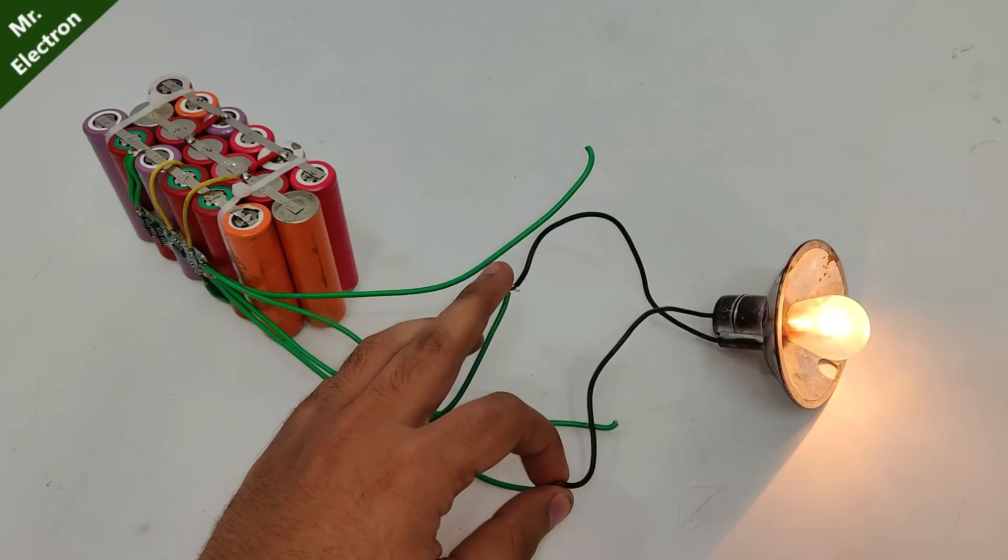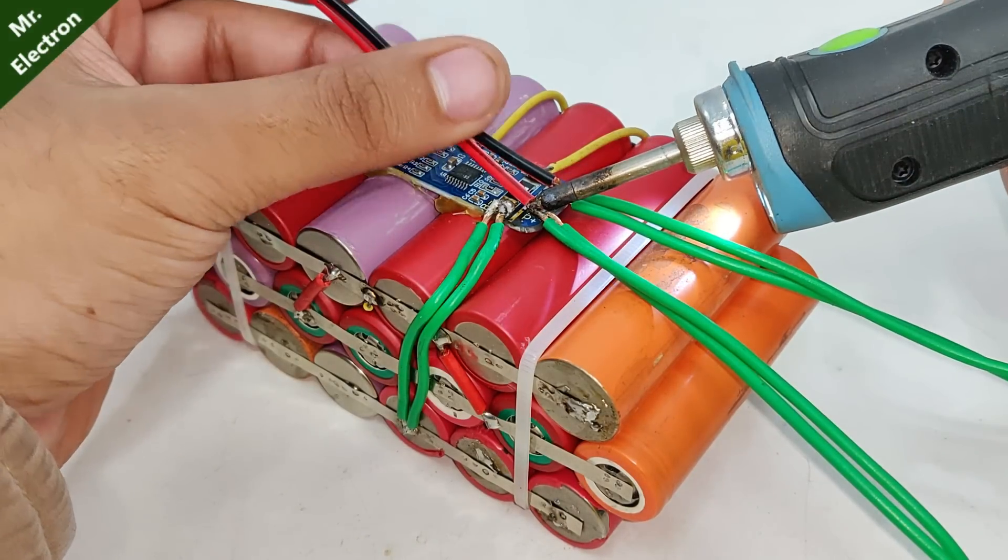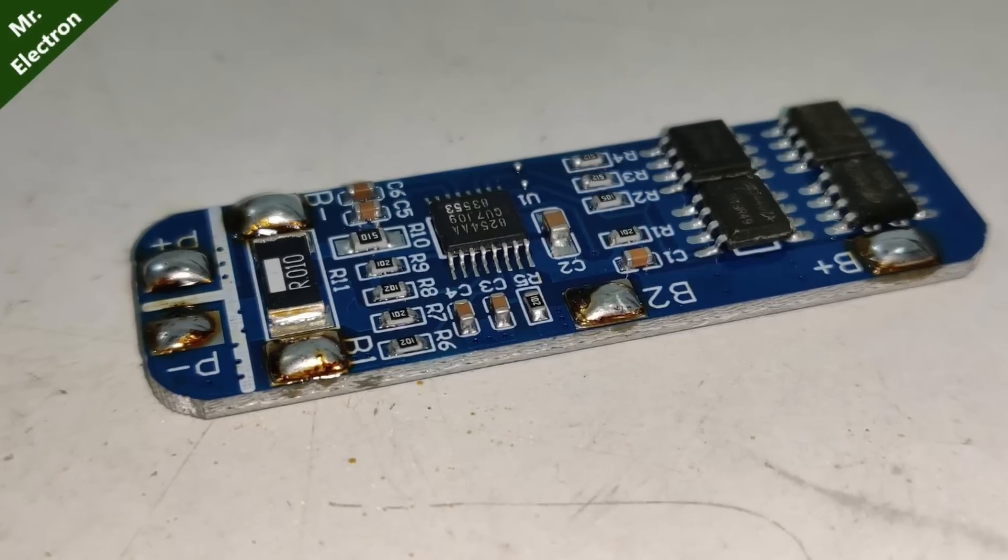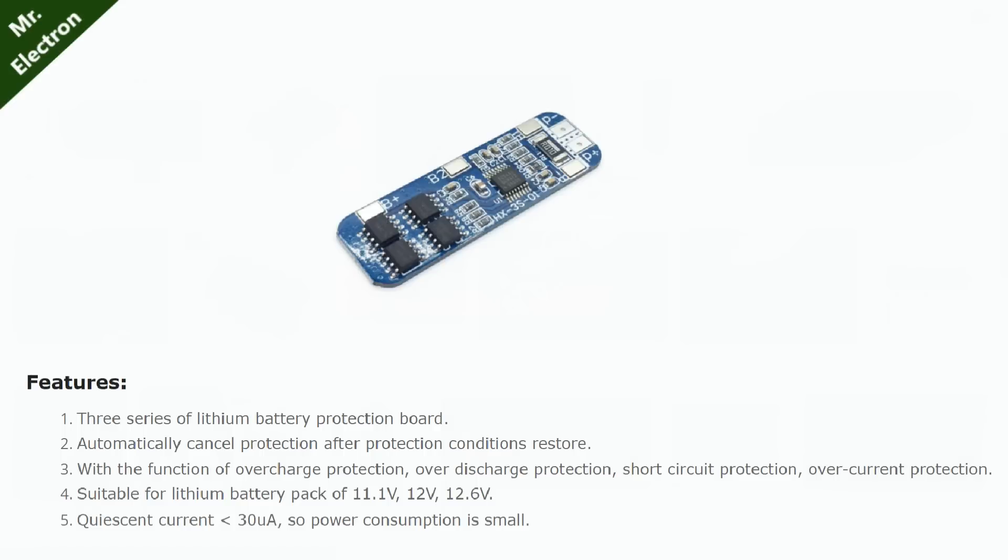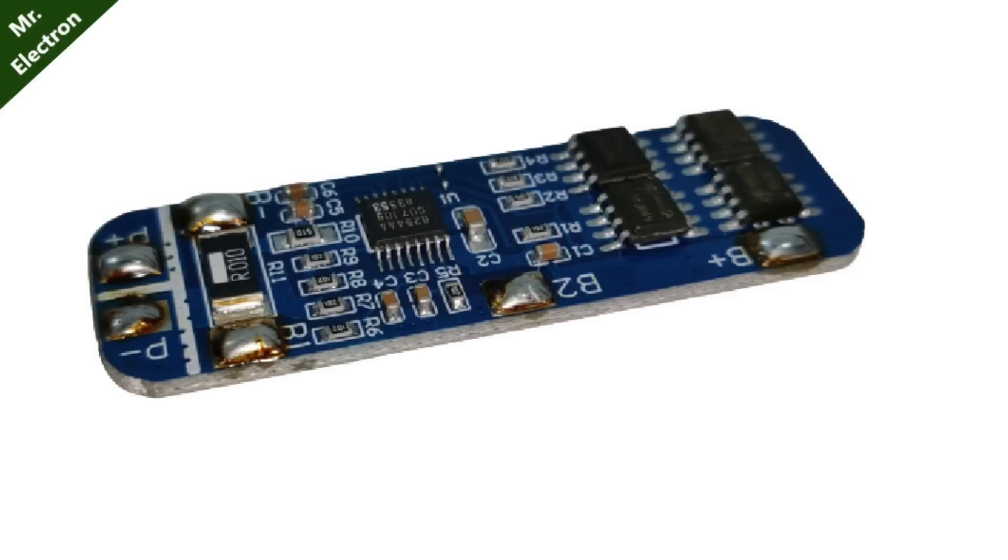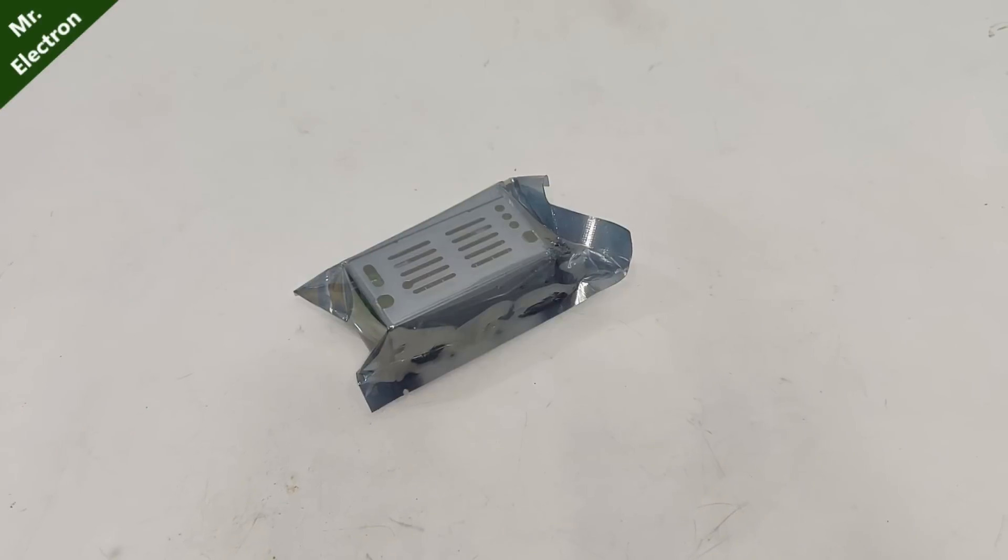Now take this female connector and connect its red wire to P plus and black to P minus. Now this BMS is cheap and one of the best in the market because it is extremely protective for your lithium batteries since it provides over voltage protection, deep discharge voltage protection, and high current discharge protection. So both the BMS and the batteries are going to last longer this way.